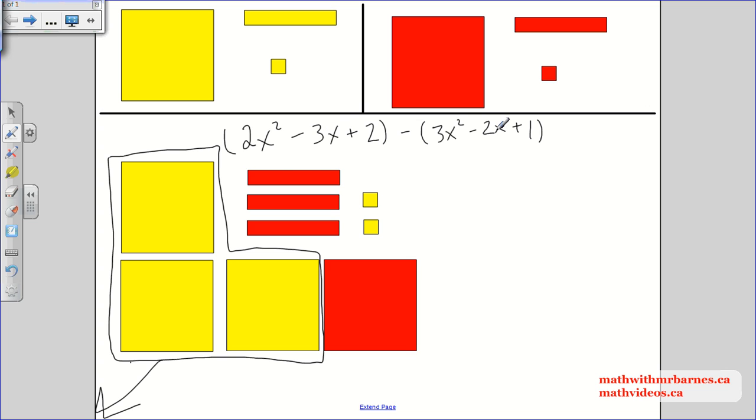Now I'm going to take away 2x from this one, so I'm taking away 2x from my negative 3x. I'm taking away a negative 2x. I'm taking away a negative 2x, so I took away a negative 2x. That's gone. And then I'm going to take away a positive 1, so I'm taking away a positive 1, and that's gone.